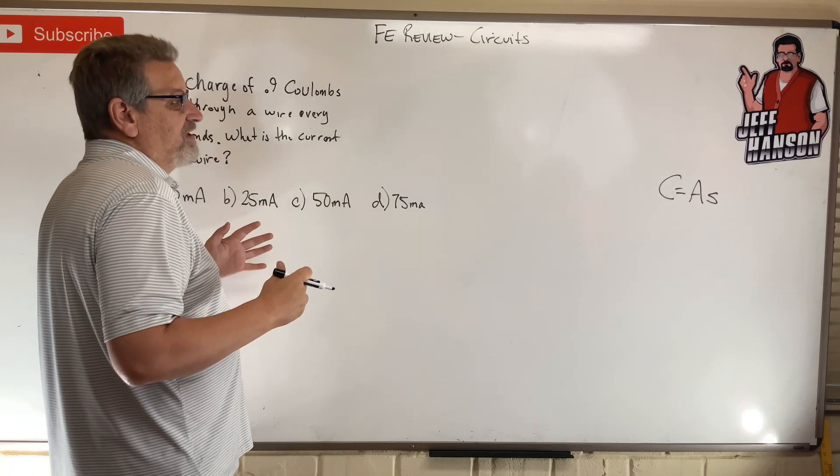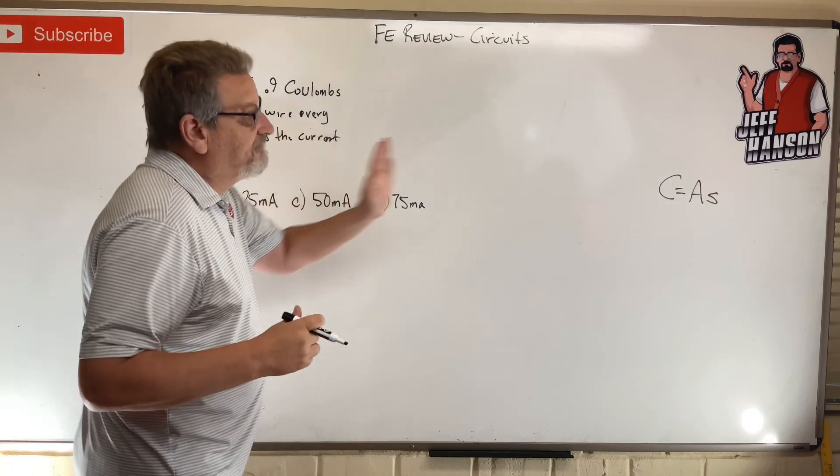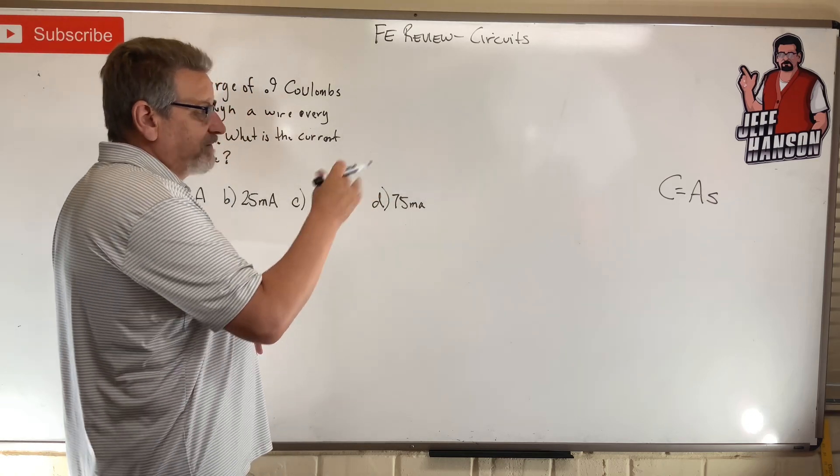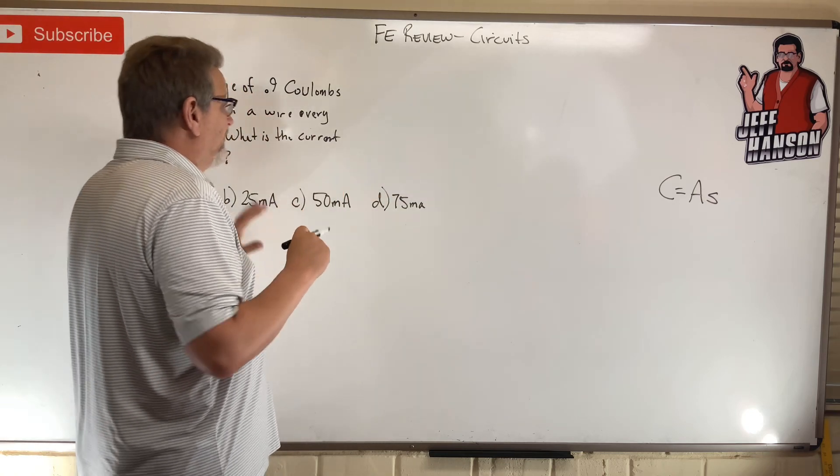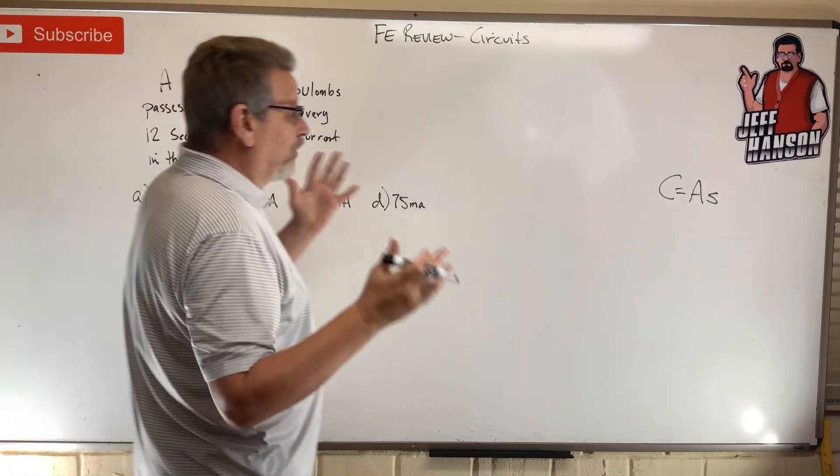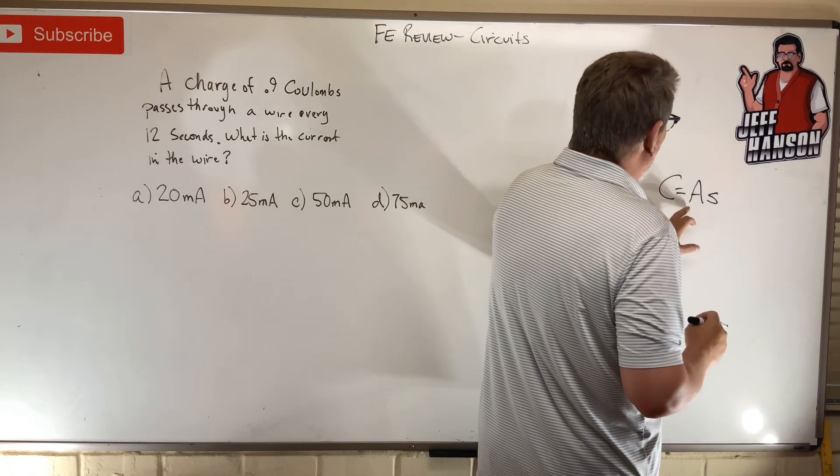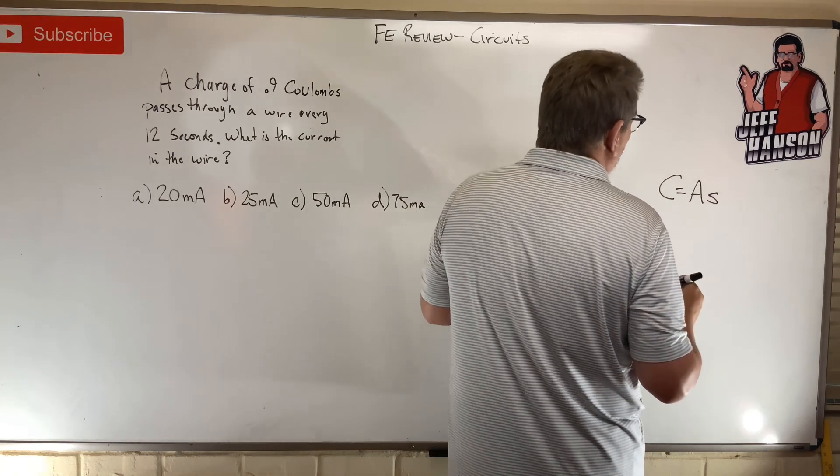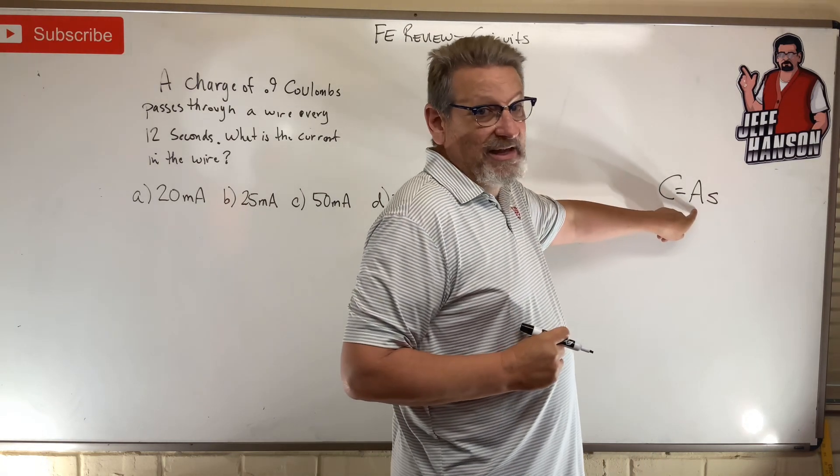And it measures the amount of current conveyed through a wire for some amount of time. Now for this one, it's 0.9 coulombs. That's going to give us a really small number, so what we need to do is turn that into milliamps instead of amps.